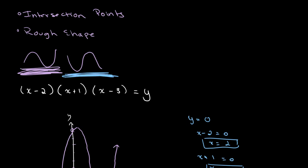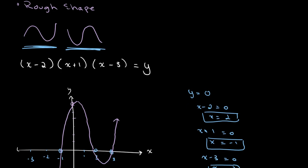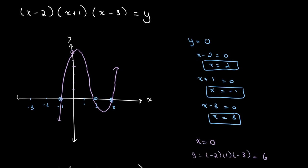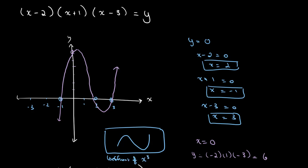At this point you're probably wondering how we determine whether our graph will look like the first shape or the second shape before we actually plot the points. It really all depends on the coefficient of x cubed. Looking at the first graph, the coefficient of x cubed is positive — because this x is positive, this x is positive, and this x is positive — so the final coefficient for x cubed is positive, and therefore it follows the first shape.